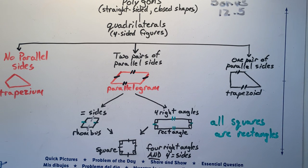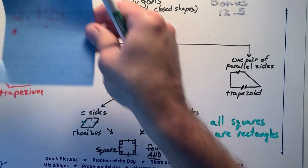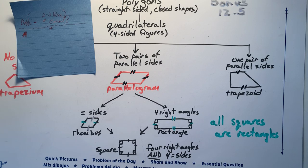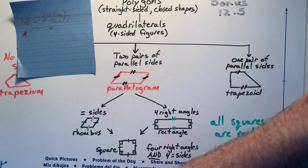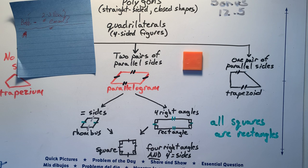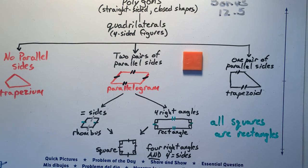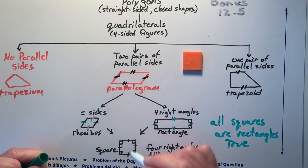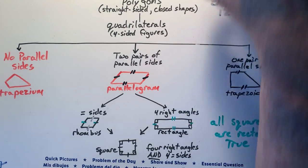But if I said all squares are rectangles — if you find any squares, here's a square that's a sticky note, and we also have a pattern block square. All squares are rectangles is a true statement. Every square you find is also a rectangle. It's also a parallelogram and a quadrilateral and a polygon as well. These types of questions are difficult.